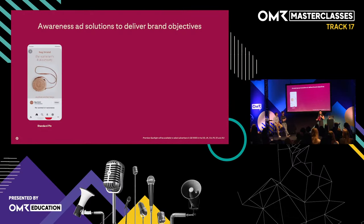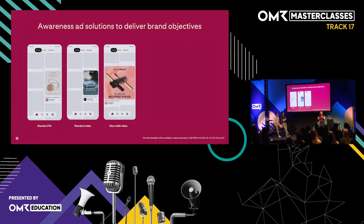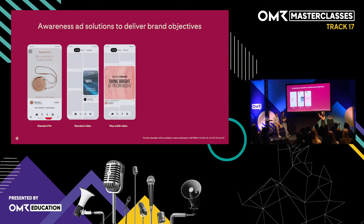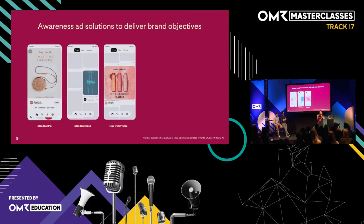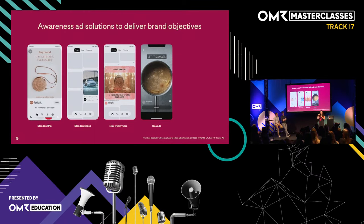When it comes to ad formats, we'll focus on the ones you've already heard about. Standard pins and standard videos are our standard vertical formats — 2x3 ratio, high-quality imagery — appearing on the home feed and the search feed. If you want to be more impactful, our mobile-only max-width video format takes over the entire width of the mobile screen. It's big, great for cutting through the clutter, and a format you could use for more impactful campaigns.